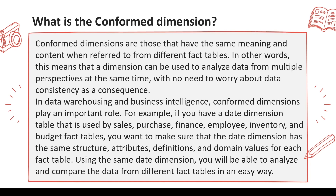Usually, date and time dimensions are conformed dimensions — their attribute meanings do not change. A month or year will remain a month or year even if joined with sales, purchase, finance, or employee tables. This is what we call a conformed dimension. You should know about a few types of dimensions, and this is one of them — please remember this definition.